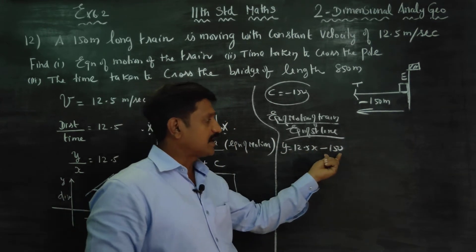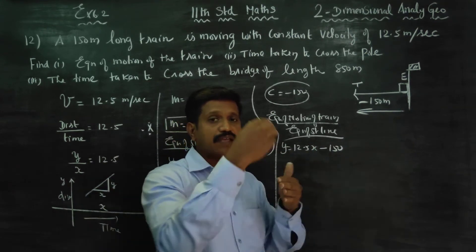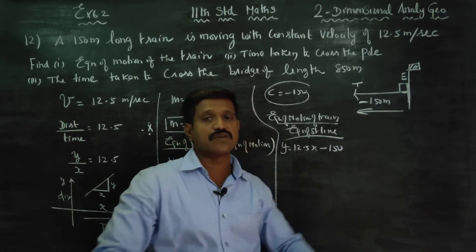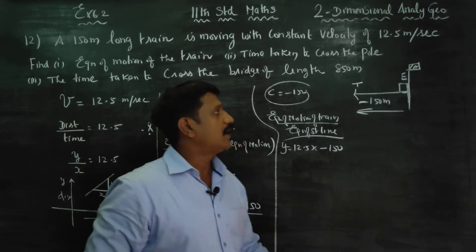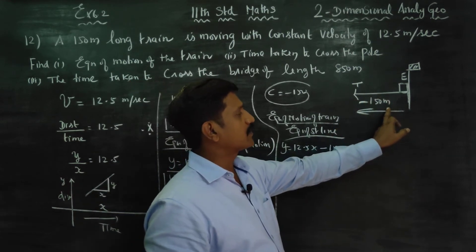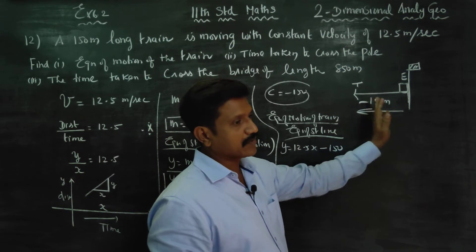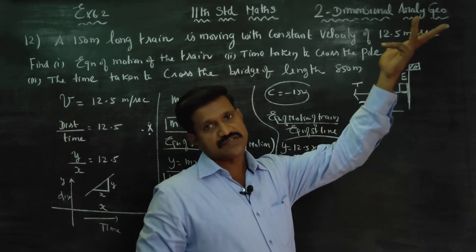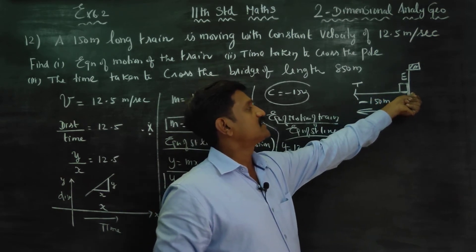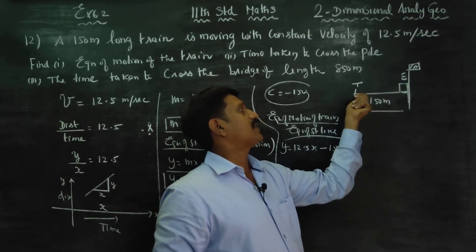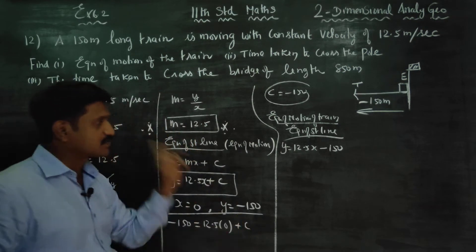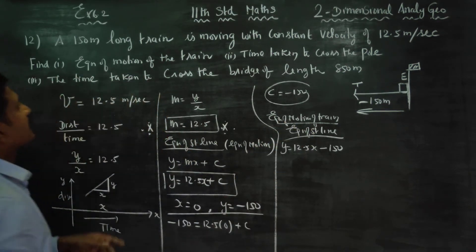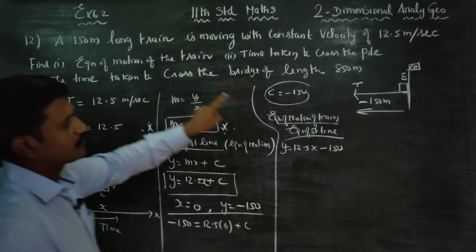Then y is equal to the length. The length has a minus symbol. The train length is equal to this equation of motion. Now let's change to the second question.